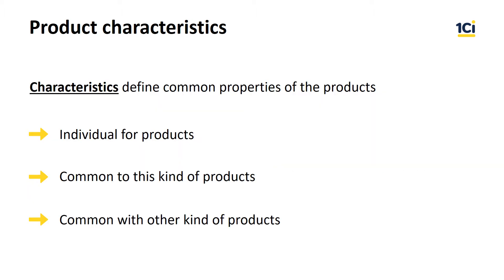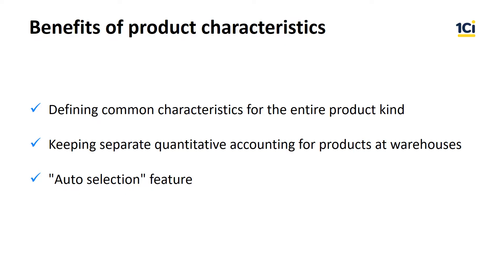1C ERP supports characteristics as well as common properties. As we remember from the level 1 lessons, the product kind catalog is for the centralized management of common properties of products. Common properties of products are defined as characteristics on the product kind level. When you create a new product, it inherits all characteristics of its product kind. Characteristics are helpful for quantitative accounting by additional attributes, defining common characteristics for the entire product kind, keeping separate quantitative accounting for products at warehouses, and for the auto-selection feature that picks materials used to manufacture finished products.